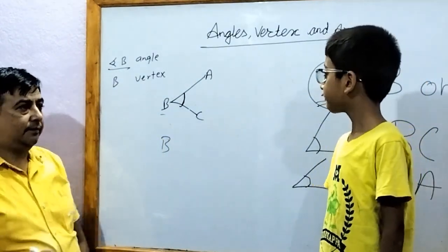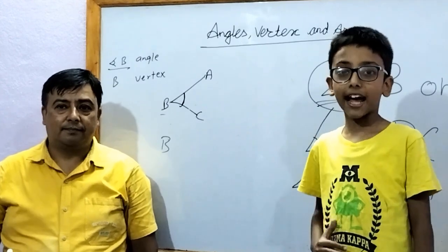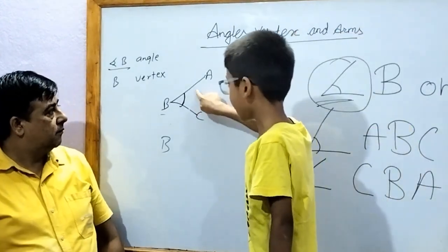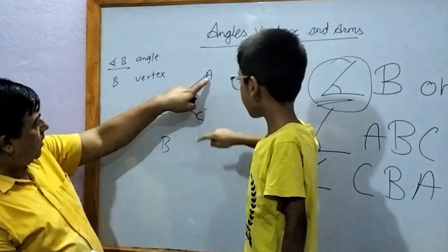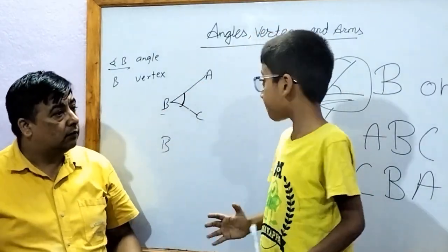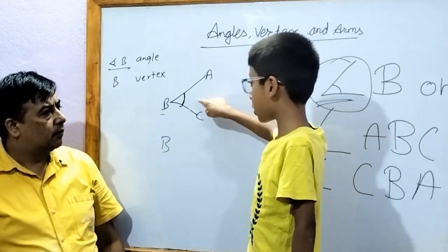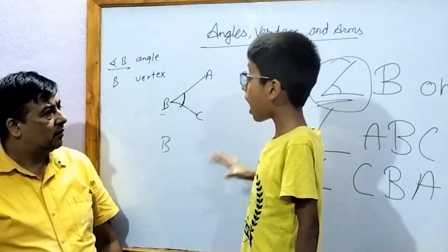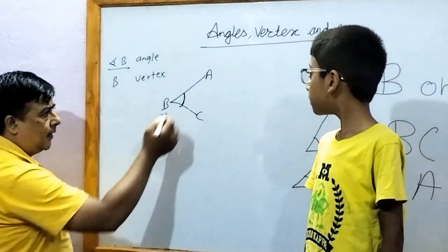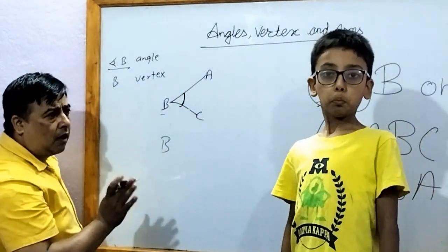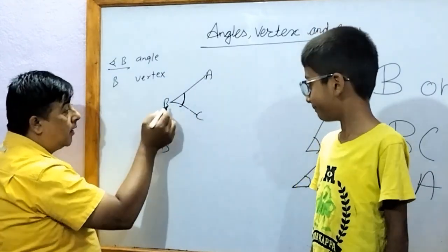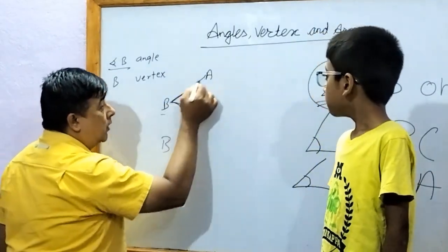Then, tell me about the arms. Have you seen these two straight lines? Lines A, B and B, C — there are two lines. These two lines are the arms of this figure. These two lines meet at a point, and they are called the arms.